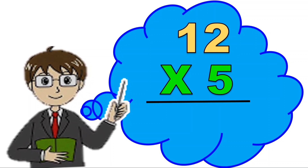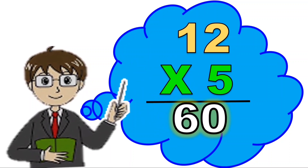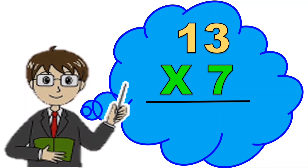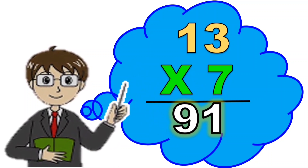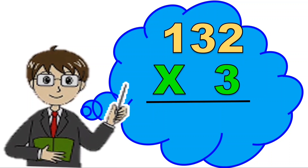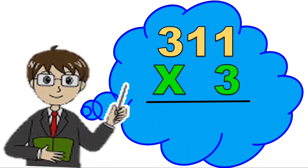Find the product of 12 times 5 mentally. What is the product of 13 times 7? Give the product of 132 times 3. And lastly, 311 times 3 is equal to...